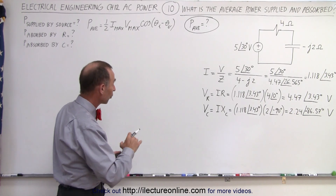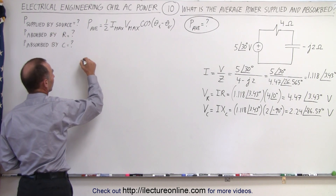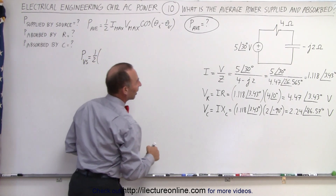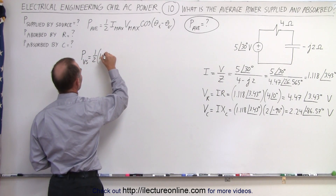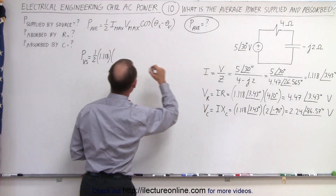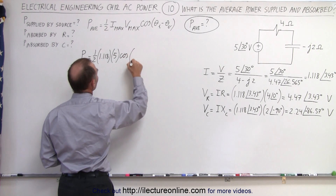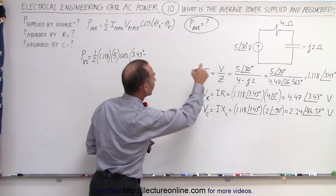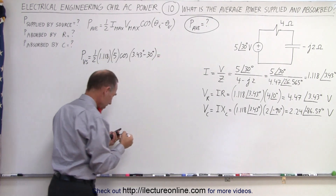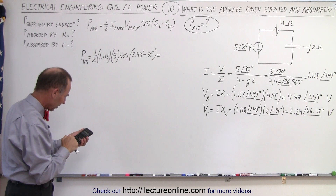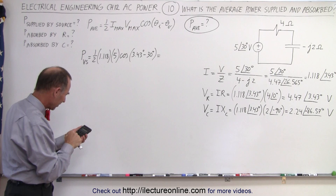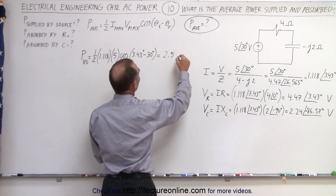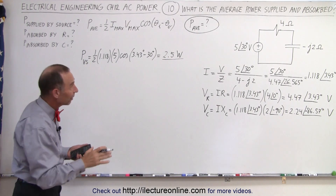Now we're ready to find the power supplied and absorbed by the various components. The power supplied by the voltage source is equal to 0.5 times Imax times Vmax times the cosine of the phase angle difference. Imax is 1.118, Vmax is 5, and the phase angle difference is 3.43 minus 30 degrees. Taking the cosine of that and multiplying gives us 2.5 watts — that is the power supplied by the power supply.